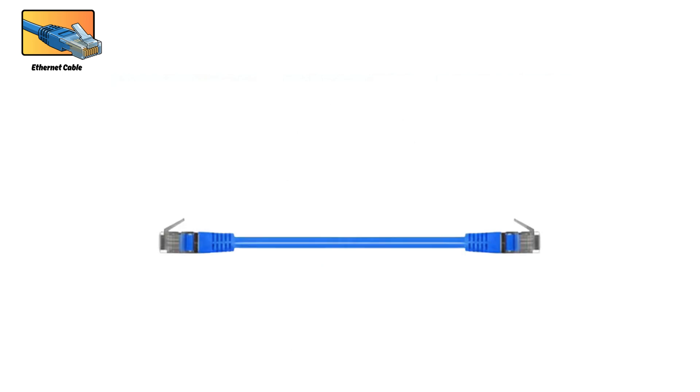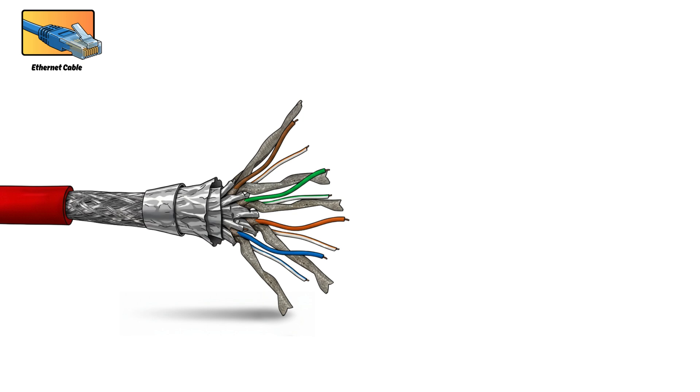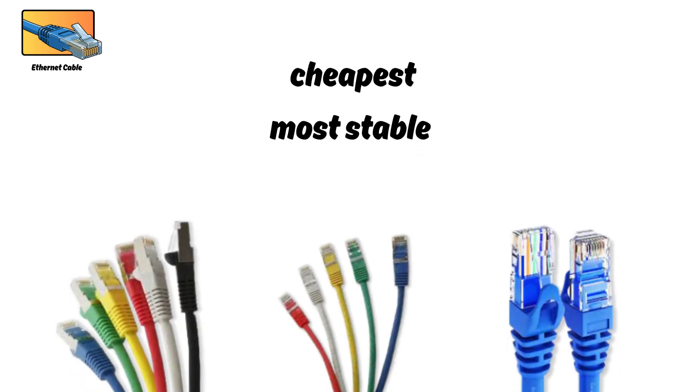Just keep in mind, Ethernet cables are only reliable up to around 100 meters. Anything longer and the signal weakens. And if you're installing them inside walls or floors, make sure the jacket is fire rated. Ethernet is still the cheapest, most stable way to connect devices compared to Wi-Fi.